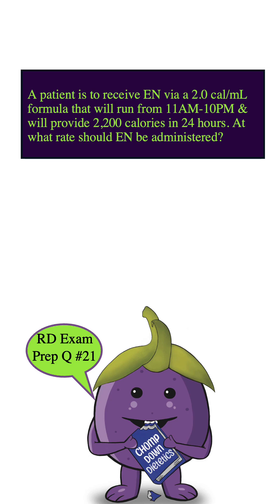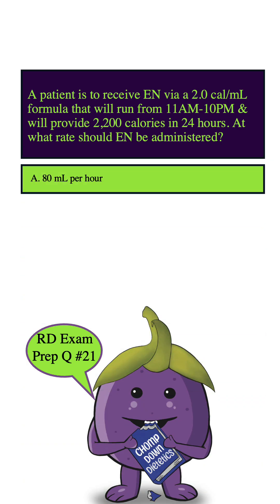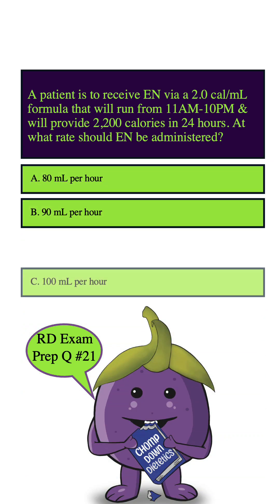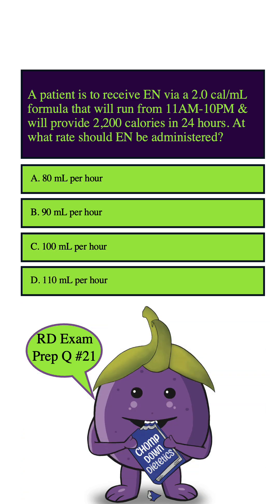A patient is to receive EN via a 2.0 calorie per ml formula that will run from 11 a.m. to 10 p.m. and will provide 2,200 calories in 24 hours. At what rate should EN be administered? A, 80 ml per hour. B, 90 ml per hour. C, 100 ml per hour. D, 110 ml per hour.